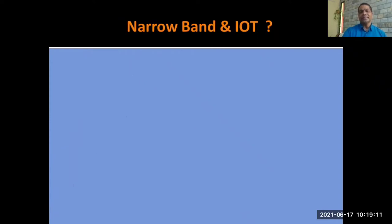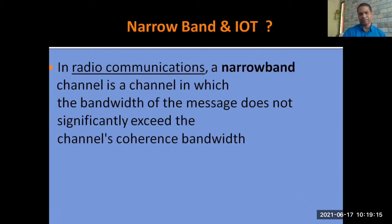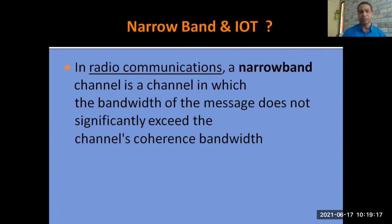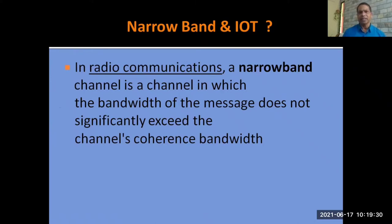What is the meaning of Narrowband in NB-IoT? In radio communication — a communication which takes place without wire, or with the help of radio frequency — a narrowband channel is a channel in which the bandwidth of the message does not significantly exceed the channel's coherence bandwidth.